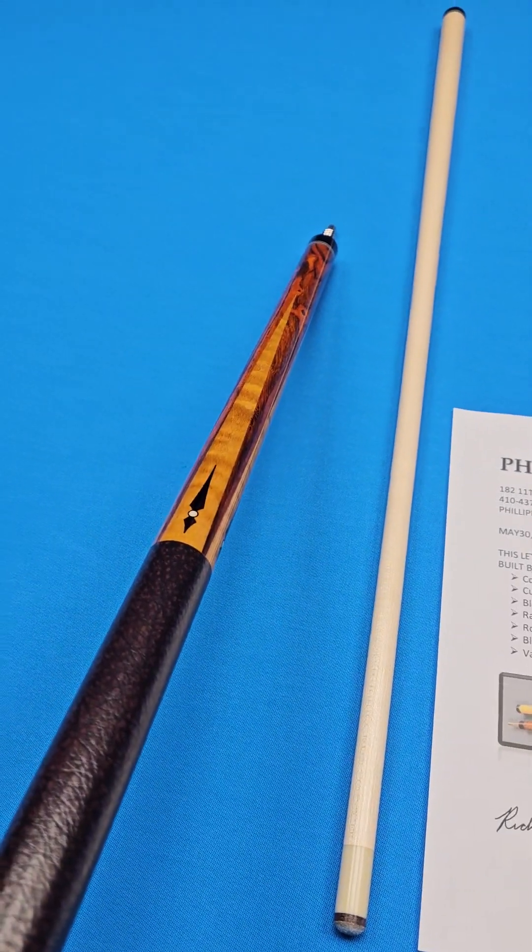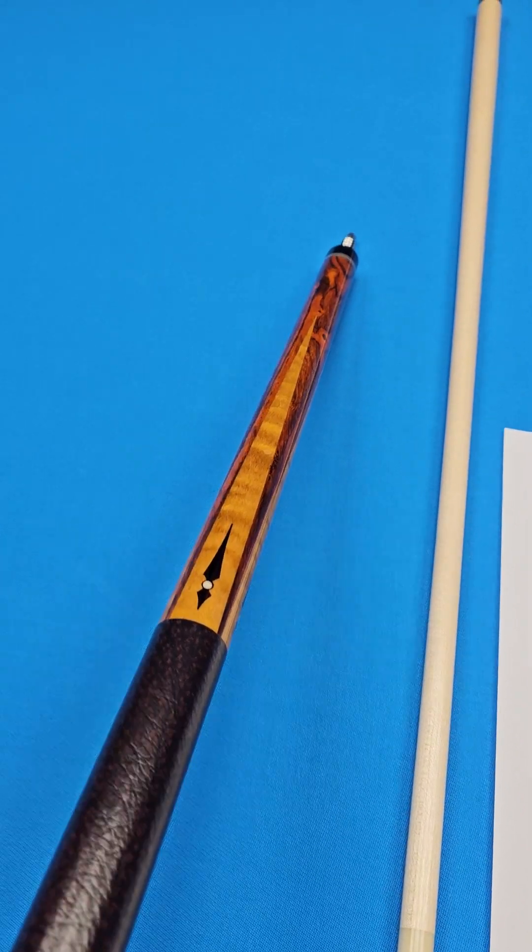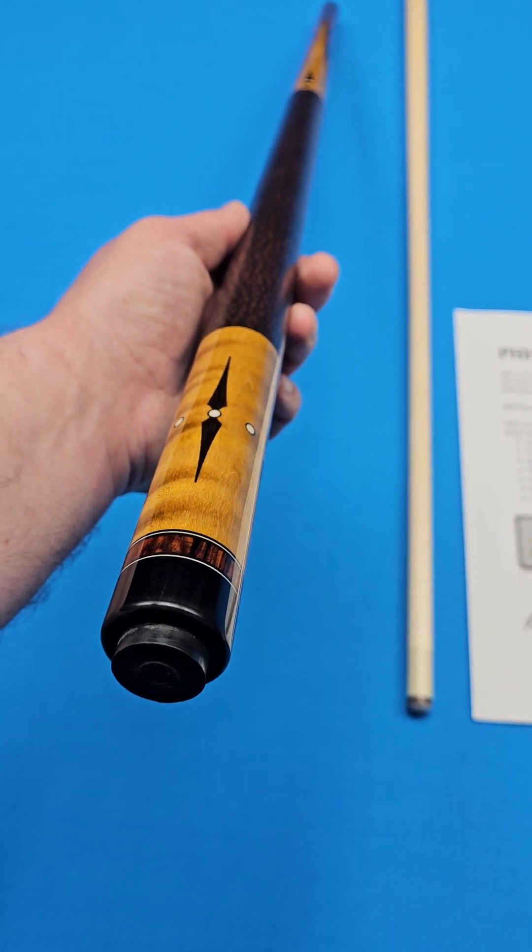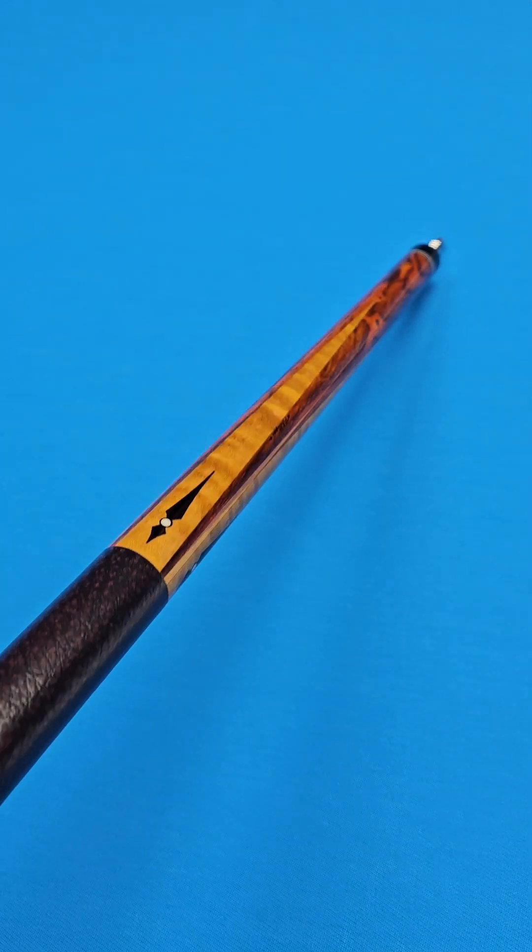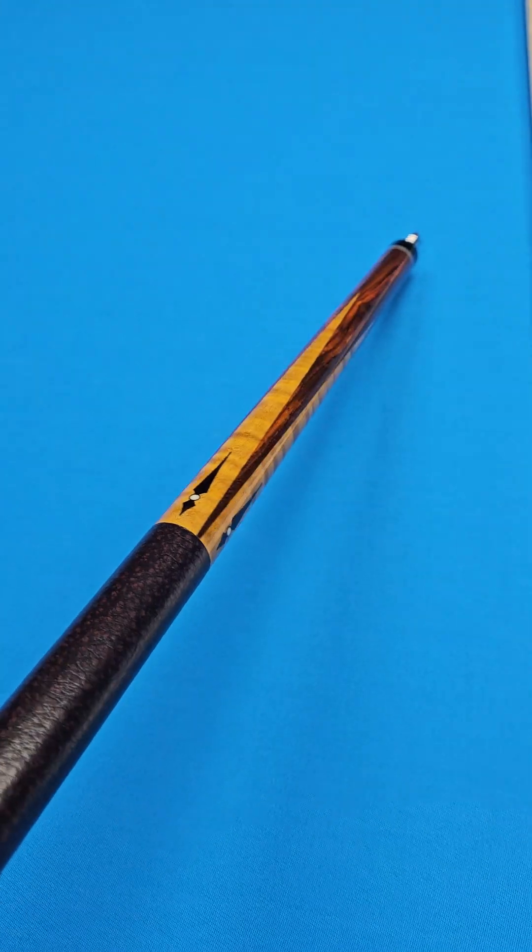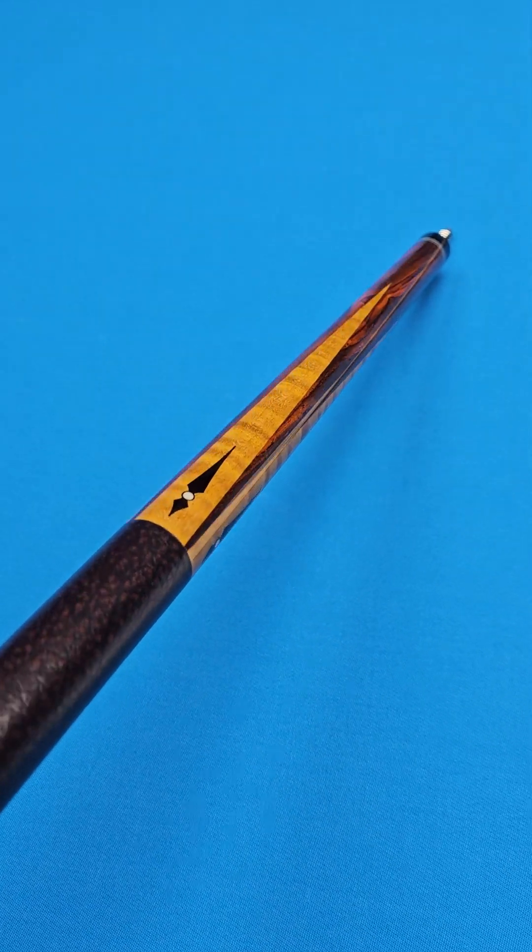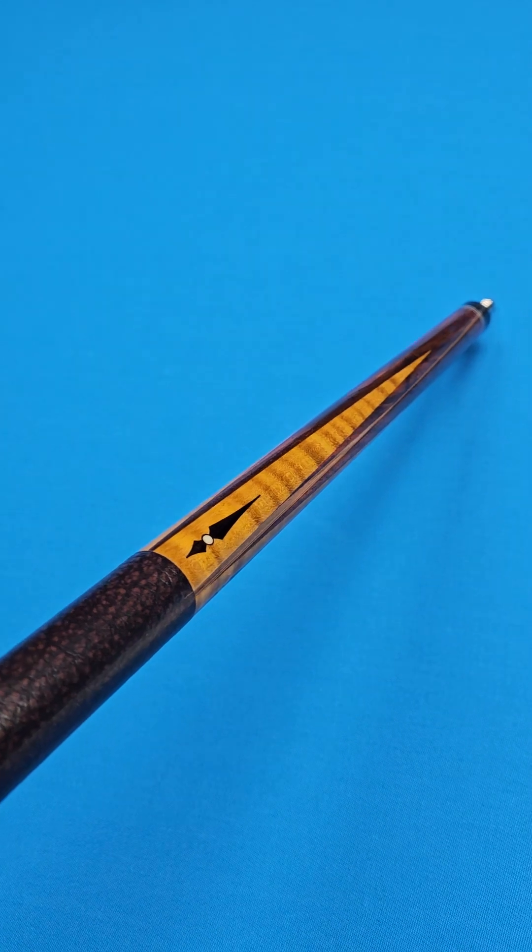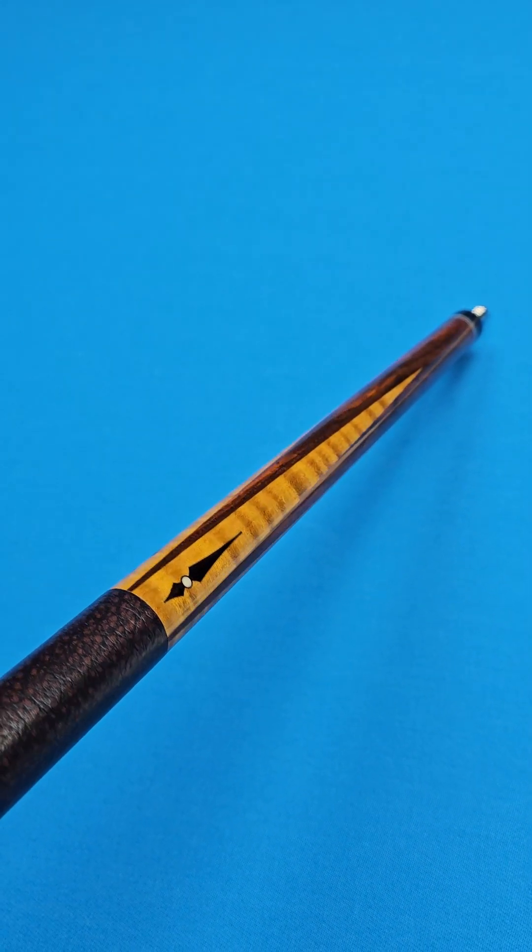The points are curly maple. He stained the curly maple, and he also stained the forearm. So he put a lot of extra work into this. He stained it because it really complements that Cocobolo. It's got a great look to it. So instead of just having that kind of plain curly maple look, it has kind of a yellowish, goldish color to it.